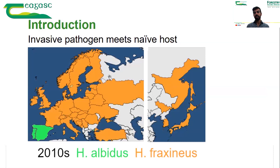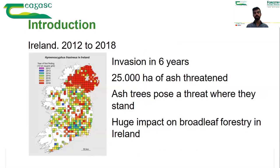In the next decade the fungus keeps spreading in Europe, affecting ash trees, and by the end of this decade it has reached everywhere in Europe except for the most southwestern parts. The story in Ireland is very similar.